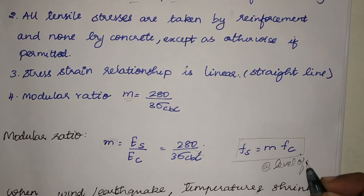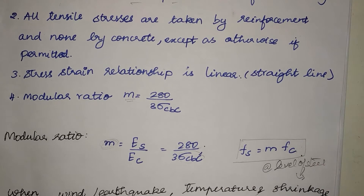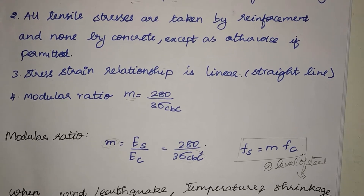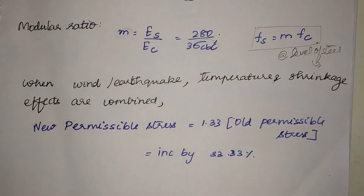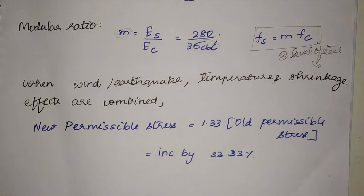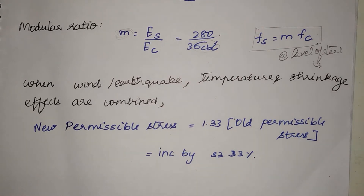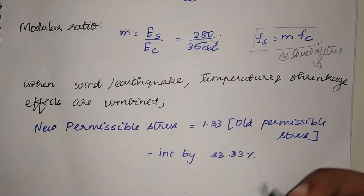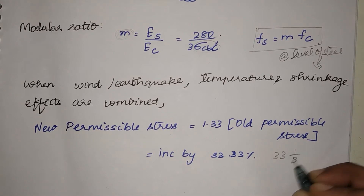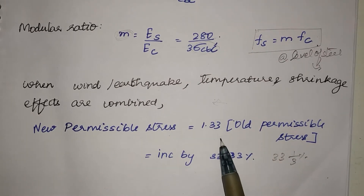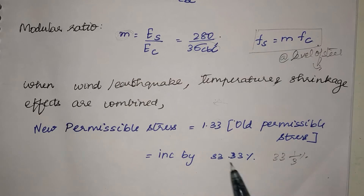This relation using modular ratio is applicable only at the level of steel, using strain compatibility from our first assumption that plane sections remain plane even after bending. In this video we will see about permissible stresses. If wind, earthquake, temperature, and shrinkage effects are acting individually or together on a structure, we increase the permissible stresses by 33.33% — referred to in IS code as 33⅓ percent — so the new permissible stresses become 1.33 times the old permissible stress.